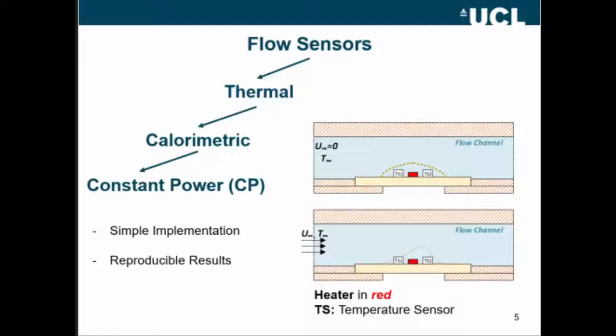Most of the thermal flow sensors, including the calorimetric, have modes of operation. This basically means how you deliver the power to the heater. One of them, the one that we use here is the constant power. Really simple. You have to deliver the same power all the time, no matter the fluid's velocity.